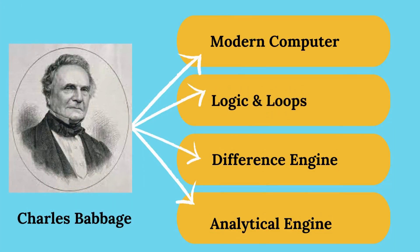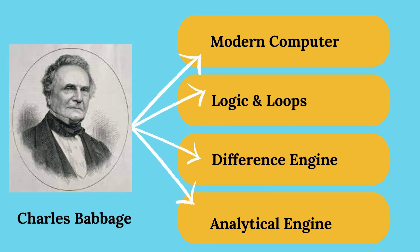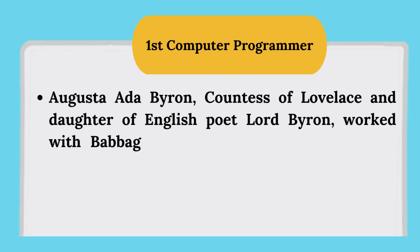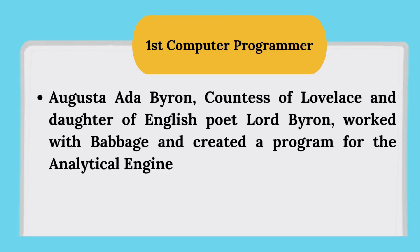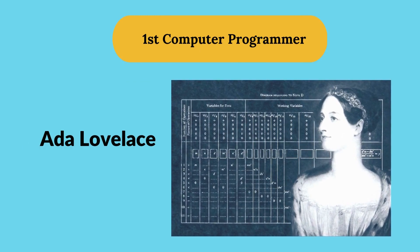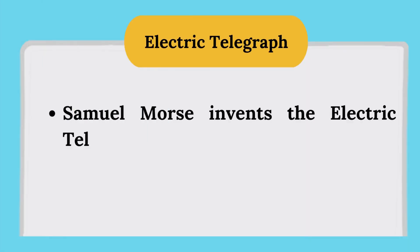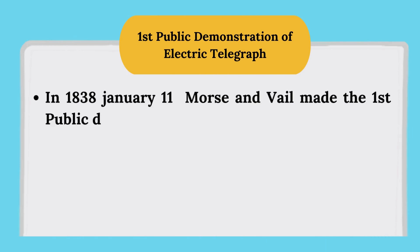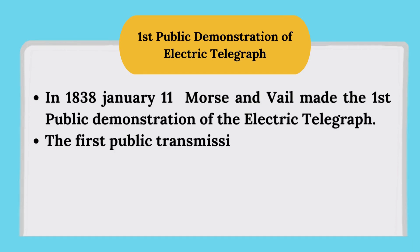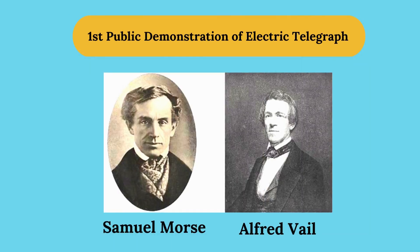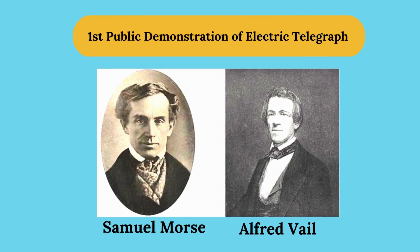Augusta Ada, Countess of Lovelace and daughter of English poet Lord Byron, worked with Babbage and created a program for the Analytical Engine. Ada is now credited as being the first computer programmer. Samuel Morse invented the electric telegraph in 1837, and on January 11, 1838, Morse and Vail made the first public demonstration of the telegraph. The first public transmission carried the message 'A patient waiter is no loser' and was witnessed by a local crowd.